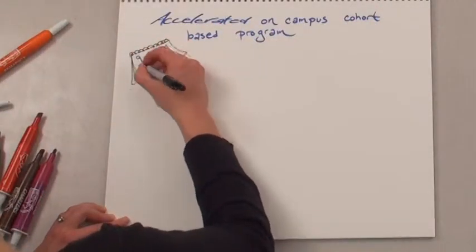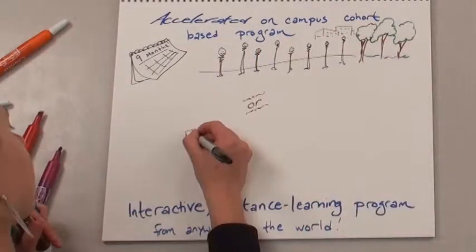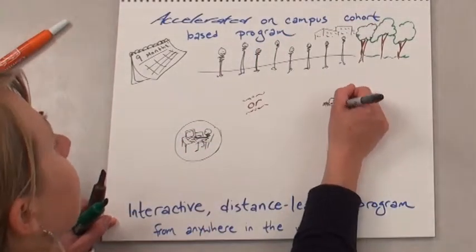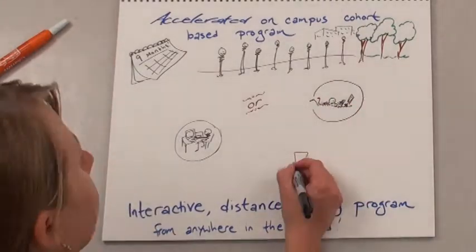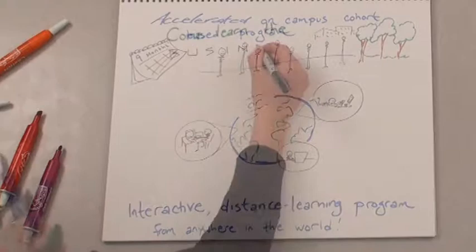You can choose from our accelerated cohort-based program and receive a degree in nine months, or you can select our interactive distance learning program and complete the coursework at a pace that fits your lifestyle from anywhere in the world.